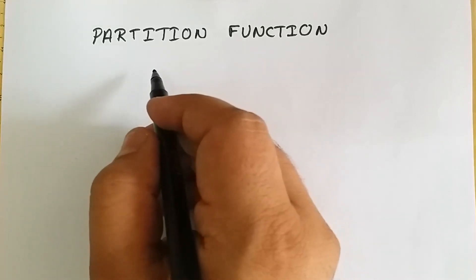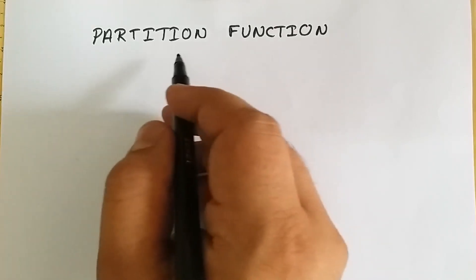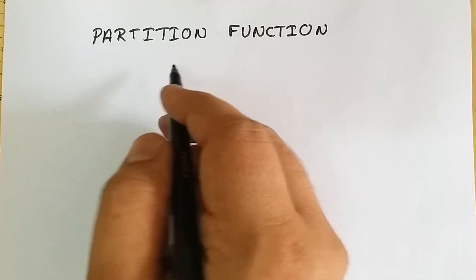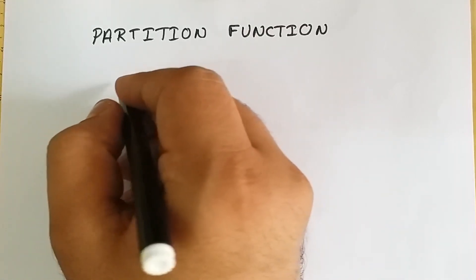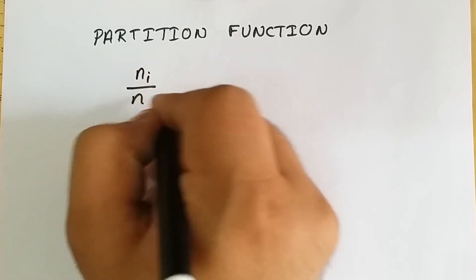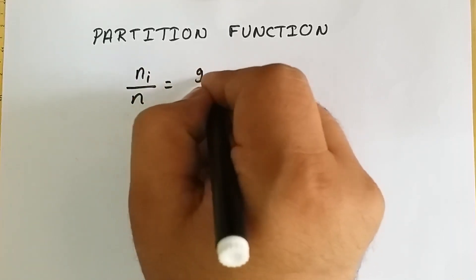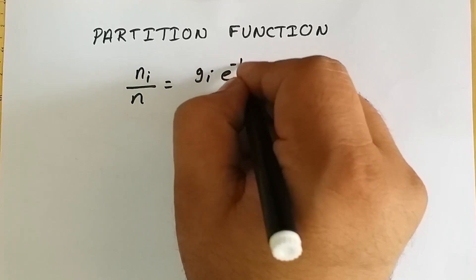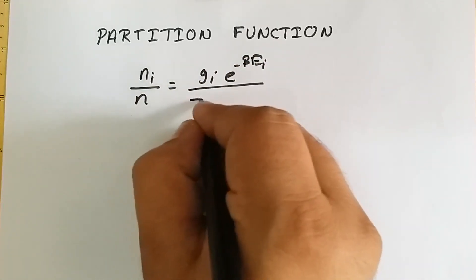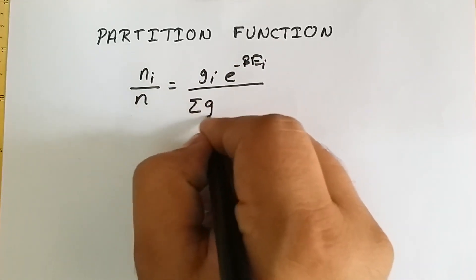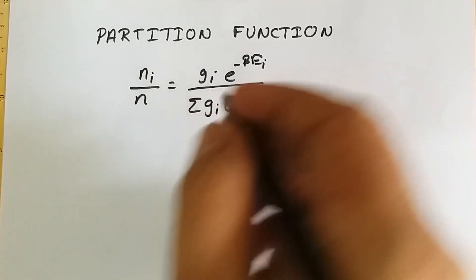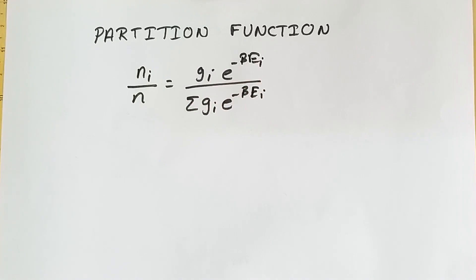Hey friends, welcome. Today we are going to discuss the partition function. When we were deriving Boltzmann's distribution law, the final equation was: n_i upon n is equal to g_i times e raised to minus beta epsilon_i, upon summation of g_i times e raised to minus beta epsilon_i. This was our final equation for Maxwell-Boltzmann distribution.